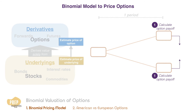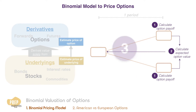This is followed by calculating the expected value of the option in one year, which is the probability-weighted average of the payoffs in each of the up and down moves. And finally, discounting this expected value back to today at the risk-free rate.